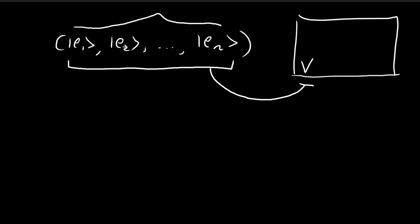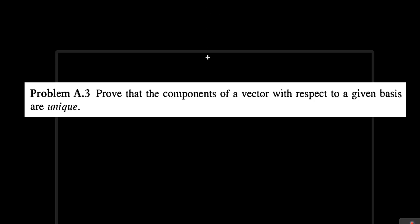For all these vectors, I cannot express them as a linear combination of the others. So for example, E1 cannot be expressed as a linear combination of the other basis vectors. This is going to be the backdrop of our problem.